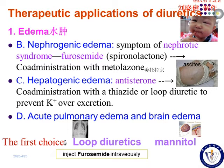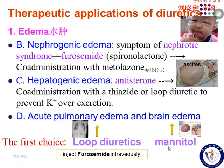That's why loop diuretics are the first choice in the treatment of acute pulmonary edema. In the treatment of brain edema, mannitol is the first choice. Because of the dehydration caused by mannitol and increased osmotic pressure, it decreases cerebrospinal fluid production, making it very useful to relieve brain edema. Loop diuretics are also helpful in the treatment of brain edema, but they are not the first choice for brain edema.